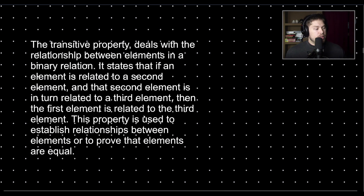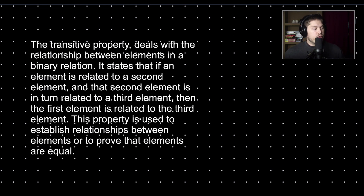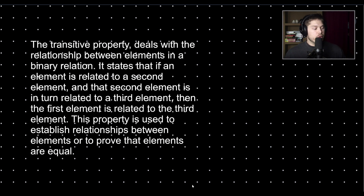The transitive property deals with the relationship between elements in a binary relation. It states that if an element is related to a second element, and the second element is in turn related to a third element, then the first element is related to the third element. This property is used to establish relationships between elements or to prove that elements are equal.